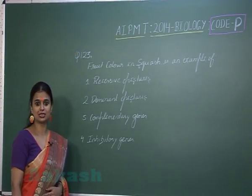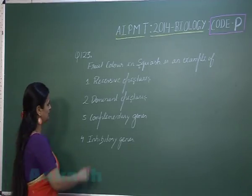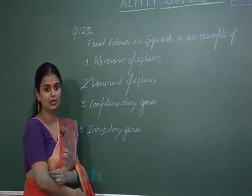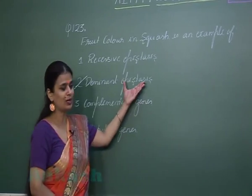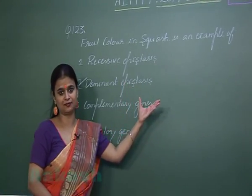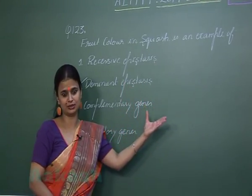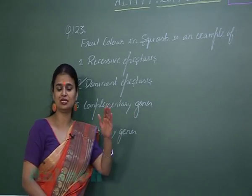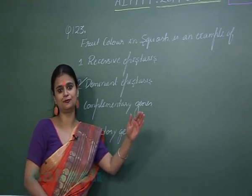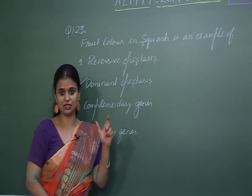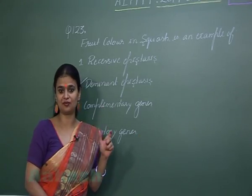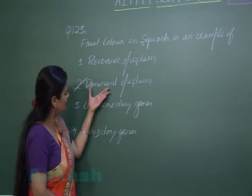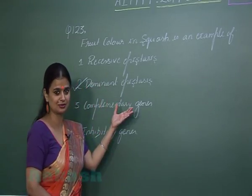Question number 123: fruit color in summer squash is an example of dominant epistasis. In epistasis, one gene masks the effect of another gene — one gene suppresses the effect of the other. If the suppressing gene is a dominant one, you call it dominant epistasis.